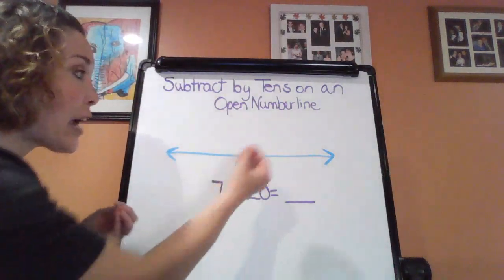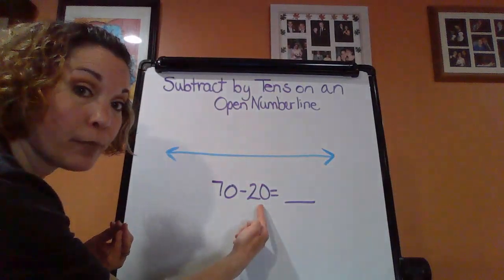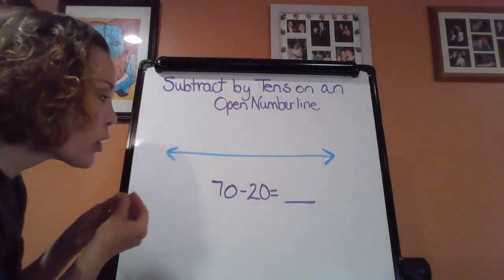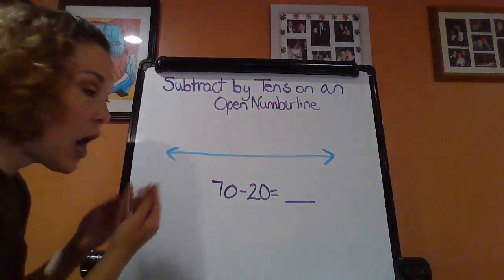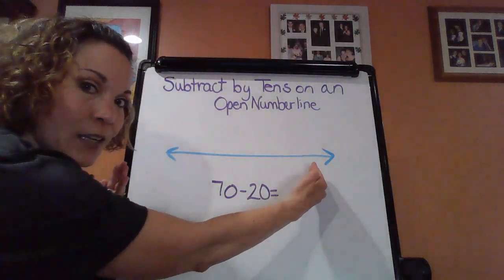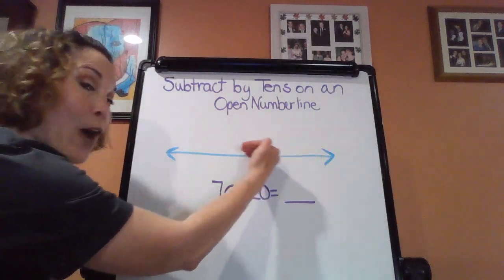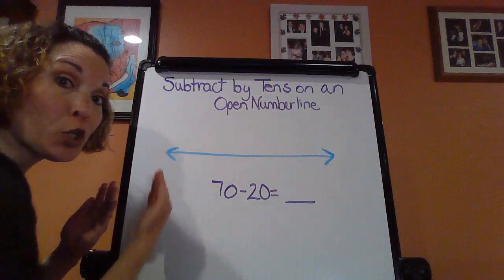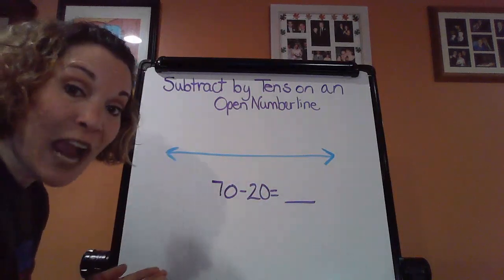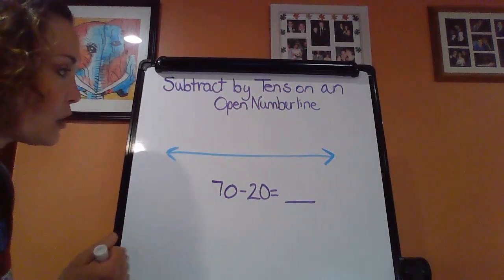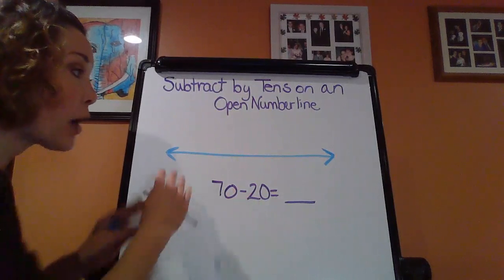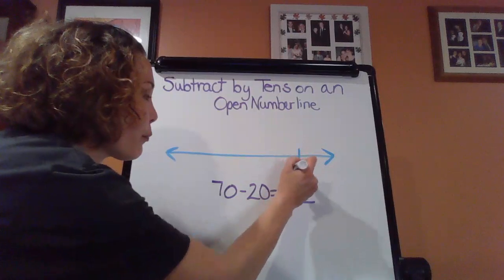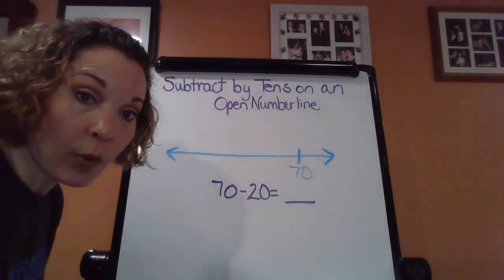You're going to start at your larger number because that is what you're taking away from. So notice I have 70 and I want to take away that 20. So where do I want to place 70? Obviously, I'm going to be placing it now at the right because when you subtract, you're counting back. So that means your numbers are going to decrease or go down in value. So let's do this. If it's 70 minus 20, the beauty of that open number line, I could put 70 right around there.